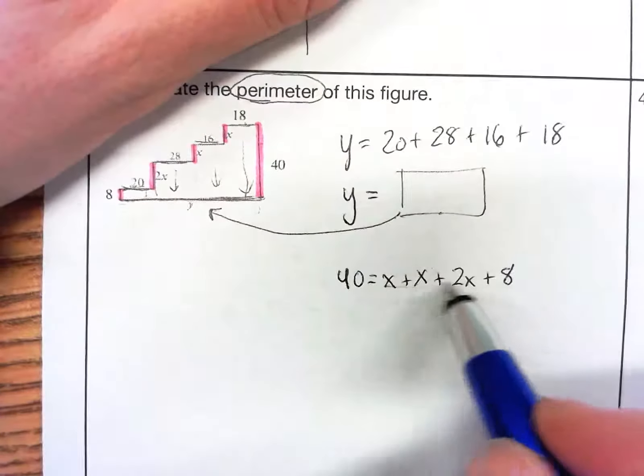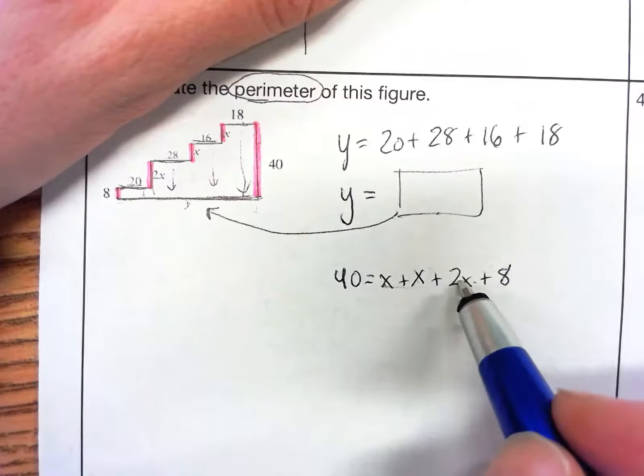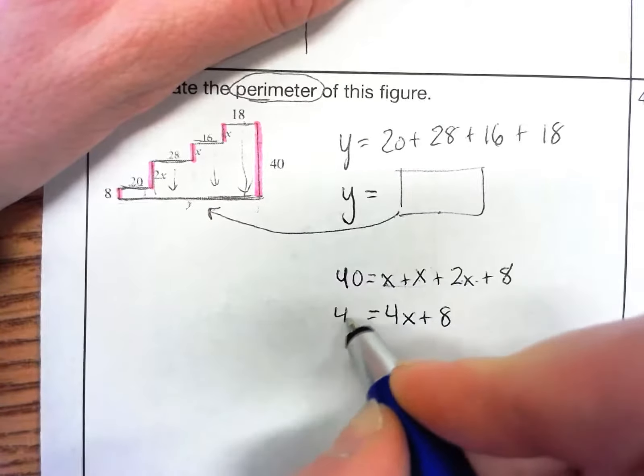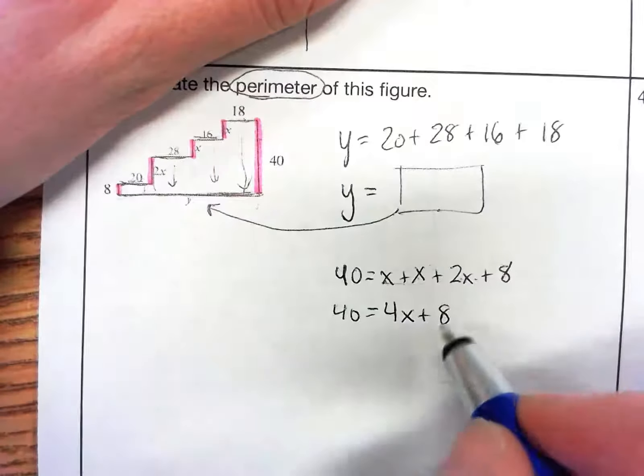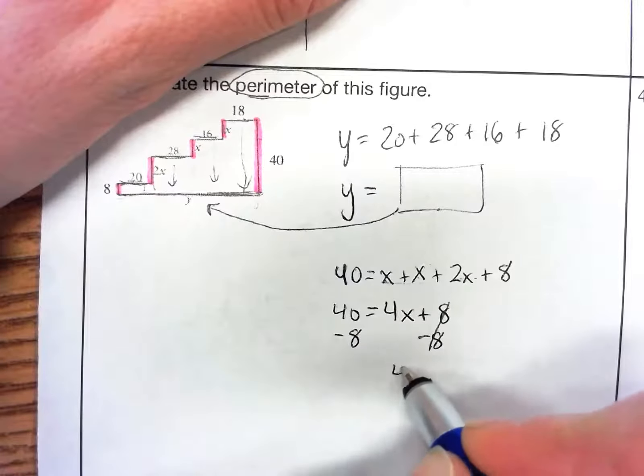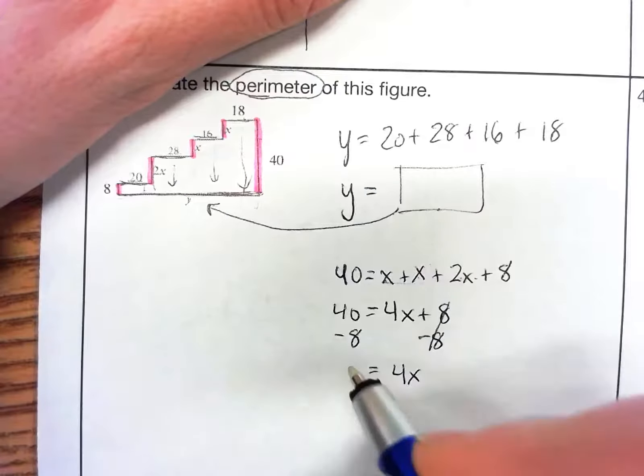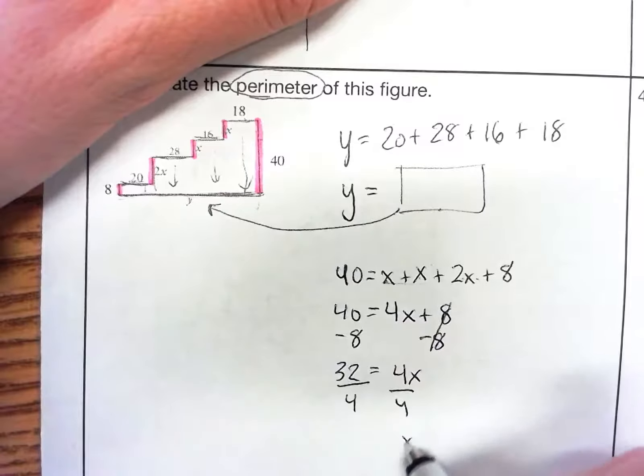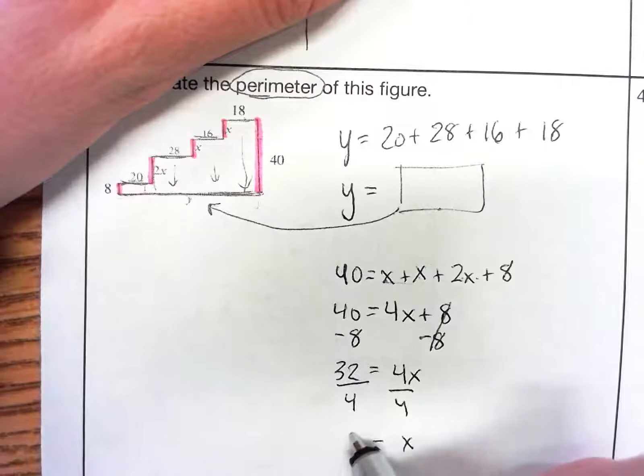So to solve this, we can combine our x's. We have 1x plus 1x plus 2x would be 4x plus 8. And then we can subtract 8 on both sides. And this cancels. We're left with 4x equals 40 minus 8 would be 32. And then we divide by 4. x equals 32 divided by 4 is going to be 8.